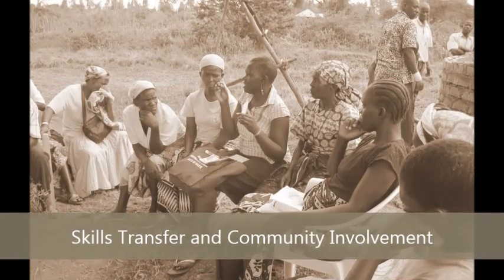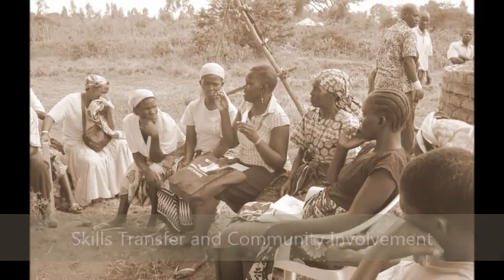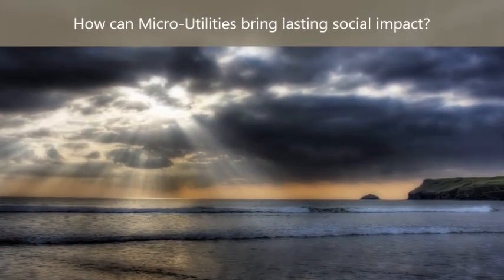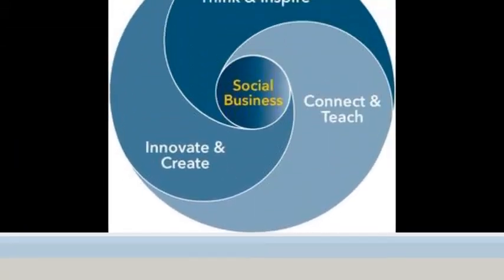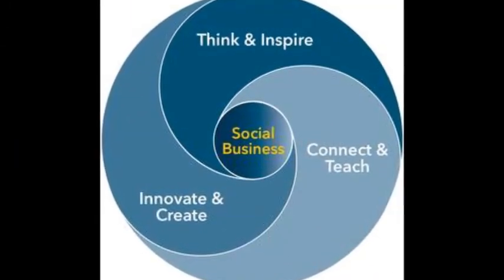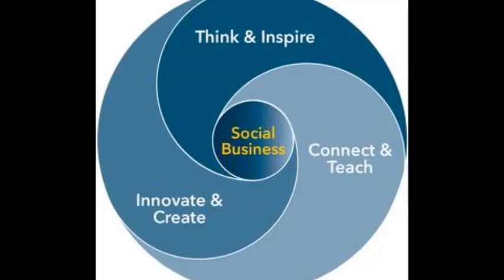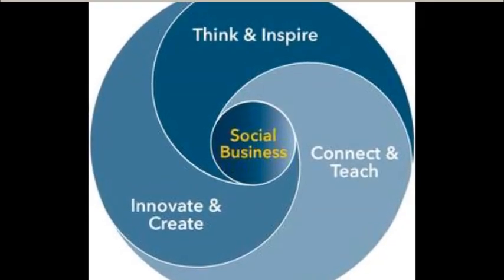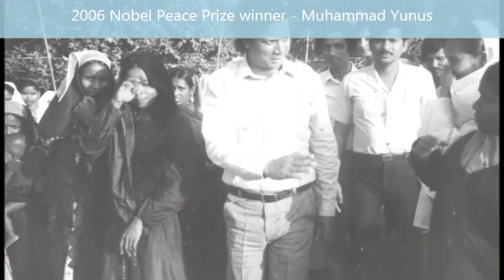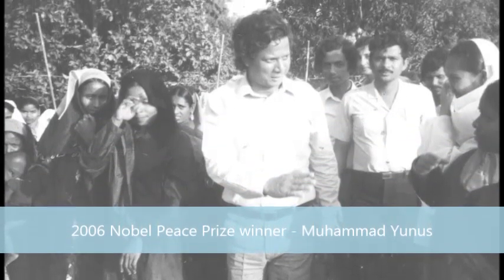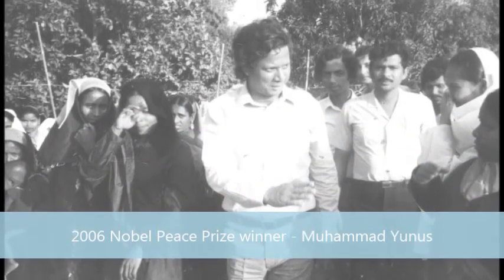From this basic truth came the concept of social business. Micro-utilities build on the social business model. Social business is a unification of business and charity, focusing on skills transfer, job creation, and community involvement to bring lasting social impact. The social business concept was laid out by Professor Mohamed Yunus in Bangladesh, which earned him the 2006 Nobel Peace Prize.